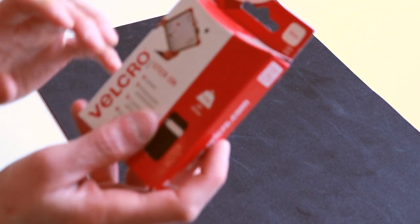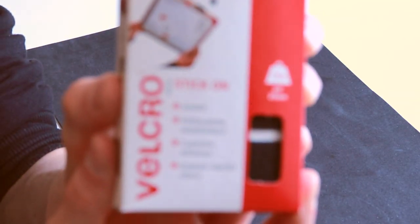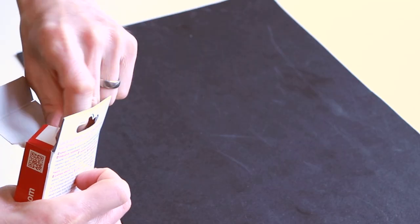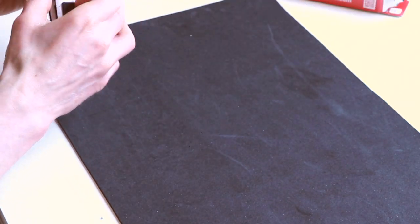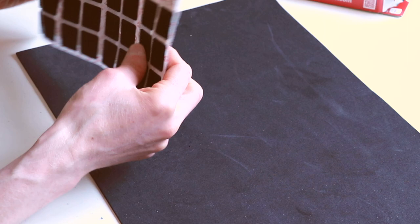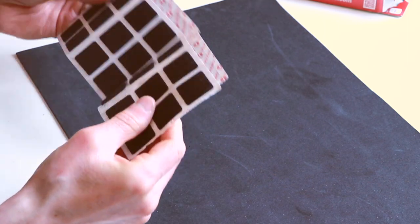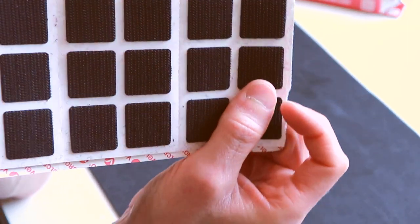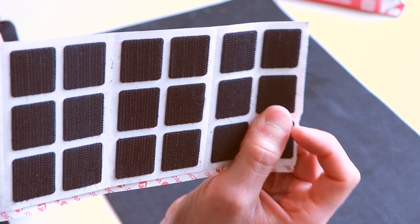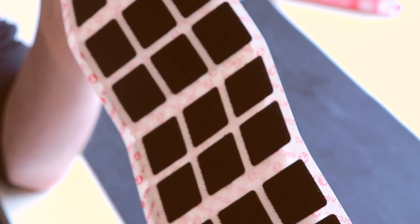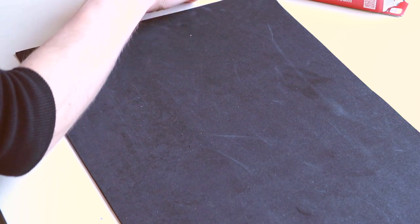Now all we do is get our sticky back velcro. And this is the point in time where you realize you've accidentally bought velcro squares instead of strips. Oh, I'm an idiot. You can make it work though, we'll make this work.